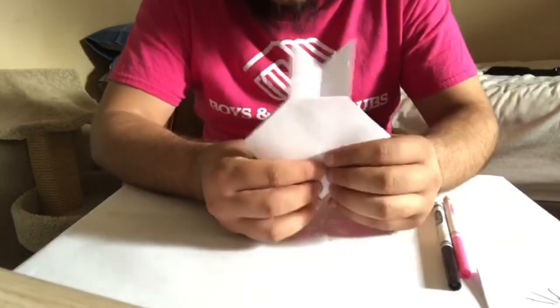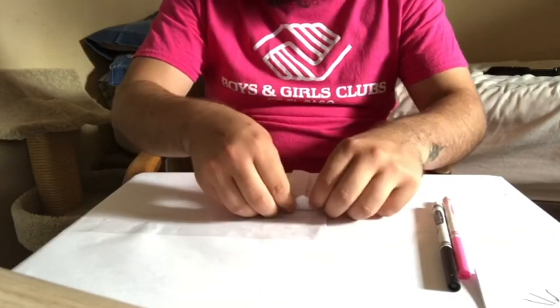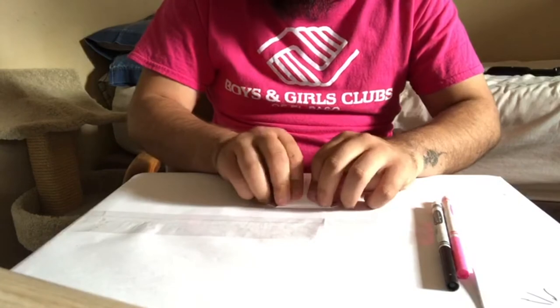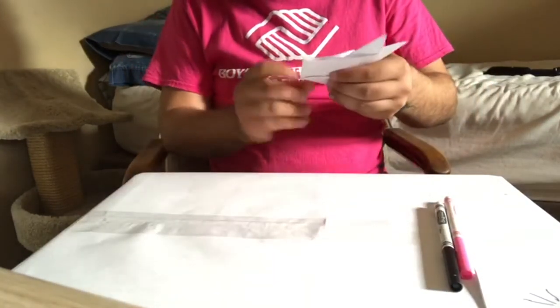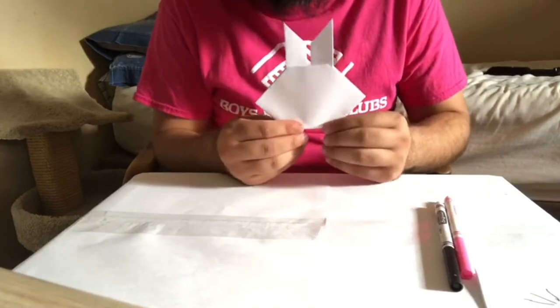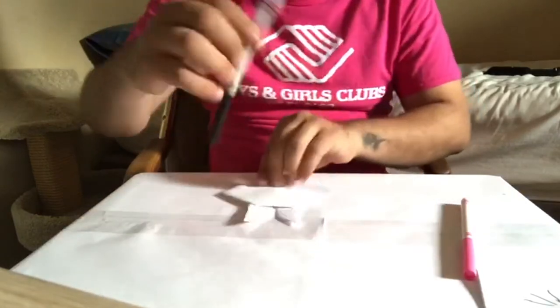And now I have two little bunny ears, guys. Right here. And I'm going to fold it on the bottom, but towards the back, about an inch or so. And there, I have a bunny face, but now I need to create his whiskers, his mouth, his nose, his eyes, and his ears. I'm going to go ahead and do that really quick for you guys.